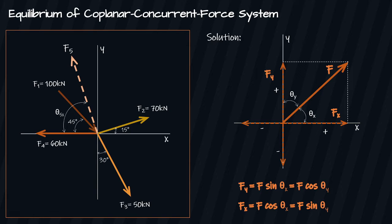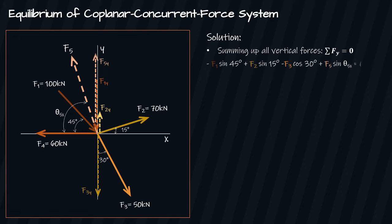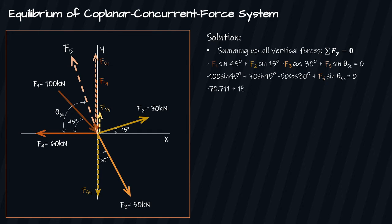Going back to our problem, we sum up all vertical forces: summation of Fy equals zero. We have: negative F1 sine 45° plus F2 sine 50° minus F3 cosine 30° plus F5 sine theta-5x equals zero. Substituting the values of F1, F2, and F3 and simplifying, we get F5 sine theta-5x, which is the vertical component of F5, equal to 95.895 kilonewtons.